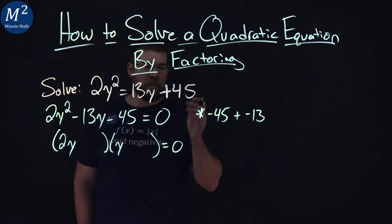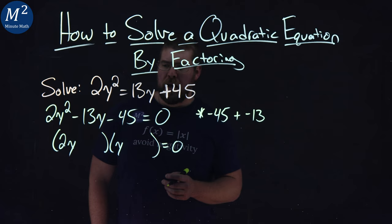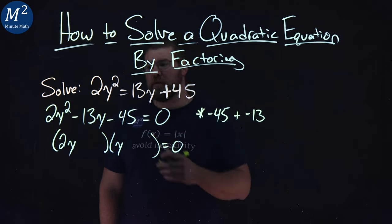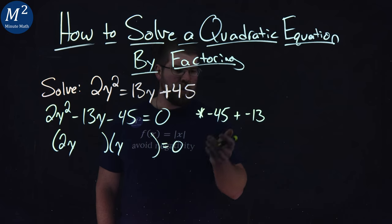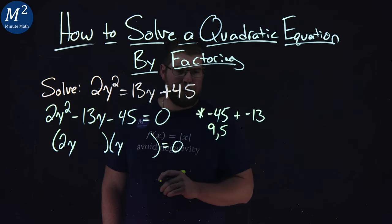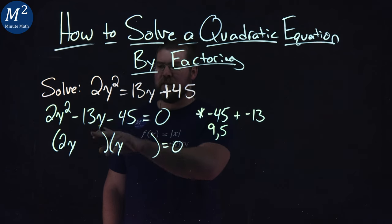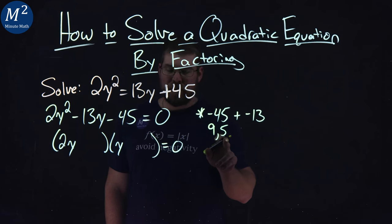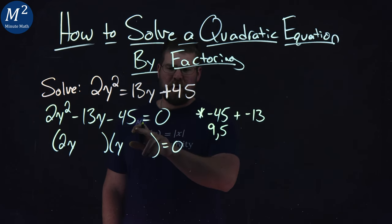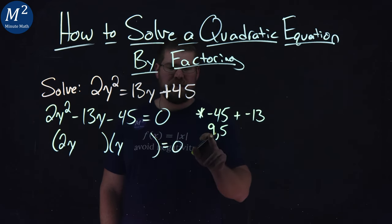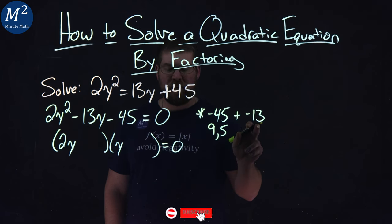So one number multiplied to get negative 45 that somehow gets me close to 13. I think 9 and 5 are kind of close to 13, so let's try 9 and 5. 9 plus 5 is 13. And if we have both negative, we can get negative or positive 45. So one has to be negative.